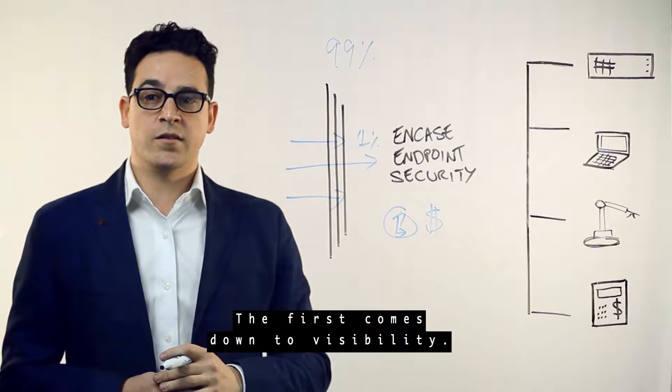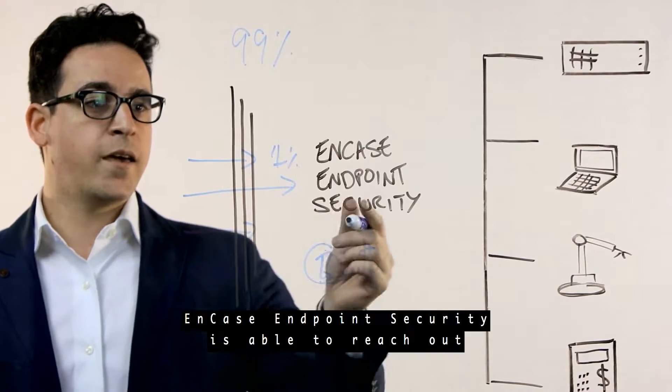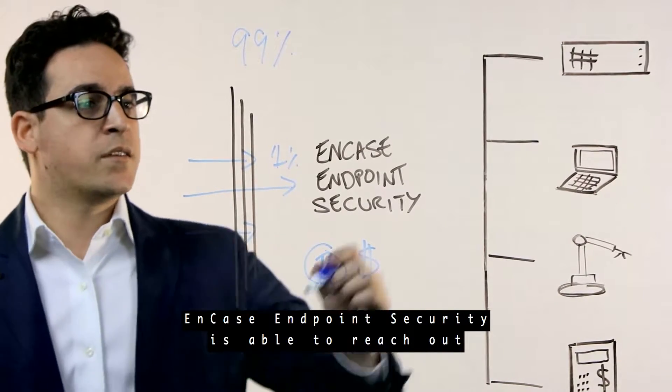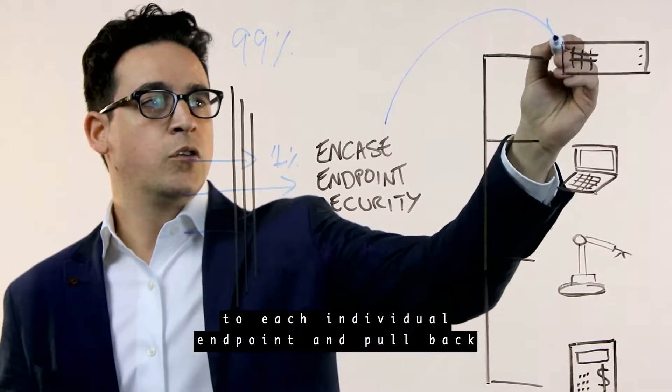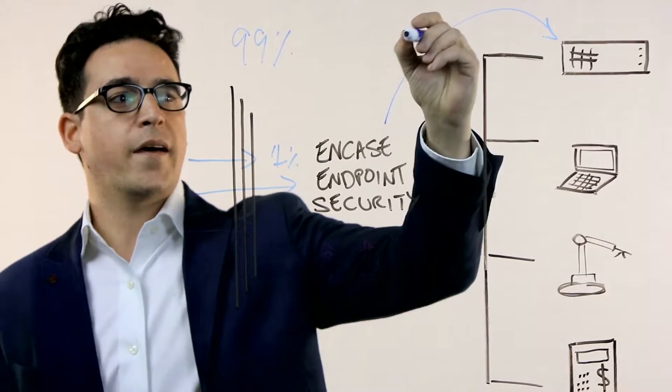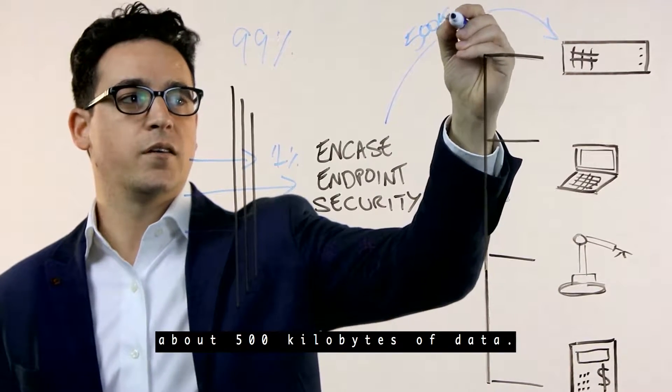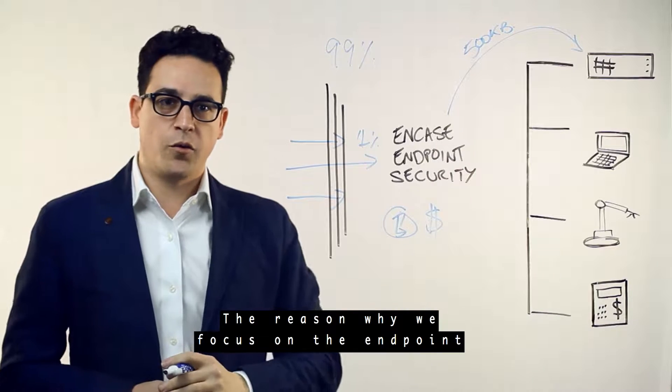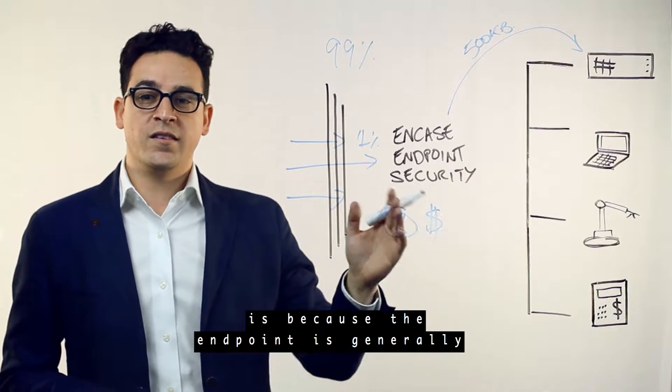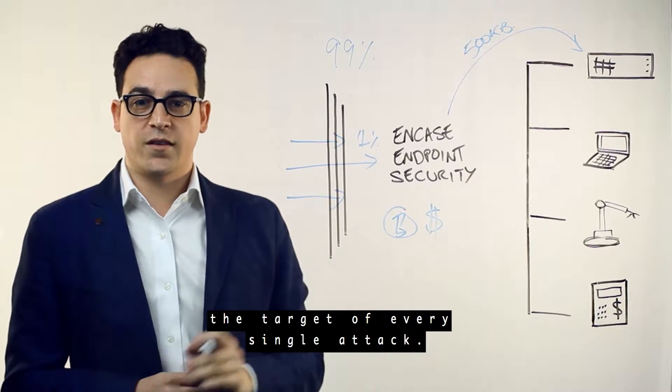The first comes down to visibility. NCASE Endpoint Security is able to reach out to each individual endpoint and pull back about 500 kilobytes of data. The reason we focus on the endpoint is because the endpoint is generally the target of every single attack.